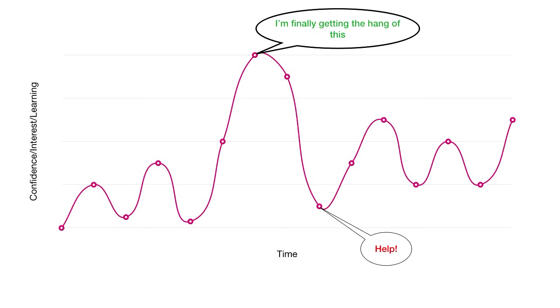I would grasp a concept and be at the peak, excited to go back to the company and start using what I'd learned. And then I'd come across someone who says something like, 'You don't mean monads, you mean monoids.' Things like that — this jargon and language that people use when talking about FP that kind of immediately attacks your confidence, and it goes down immediately.